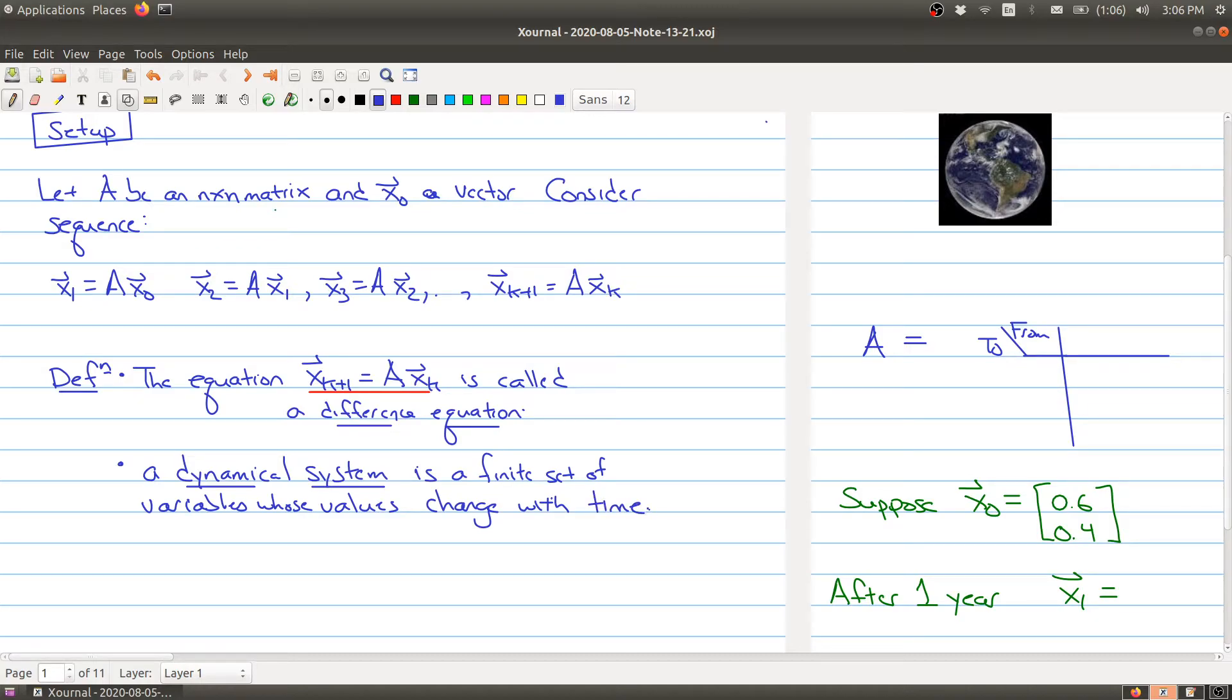A dynamical system is a finite set of variables whose values change with time. In the above, you're given an initial vector x_0 with entries y_1 to y_n, and it's the y_i's that are changing with time. Each coordinate is changing with time and tells a particular piece of information. This will become clearer when I set up an example.